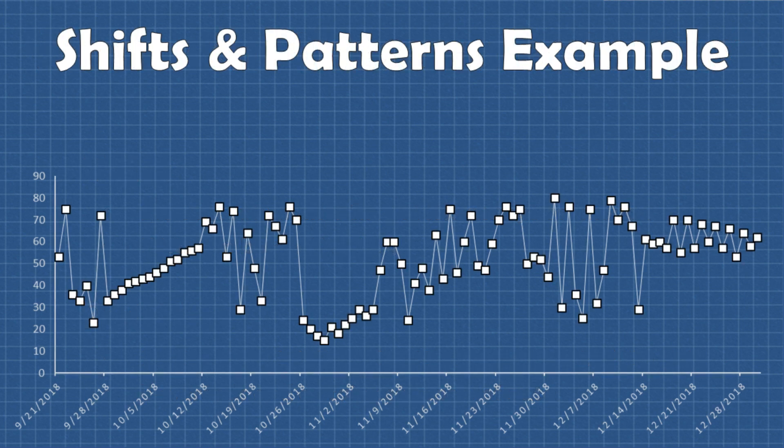Let's look at an example data set. Do you see any shifts? Any patterns? Just visually we might be able to look at the data and see some patterns or shifts. Here might be a trend, this might be a shift, this looks like it could be some kind of pattern, but we want to be a little bit more certain.